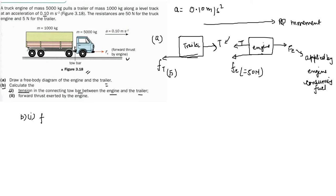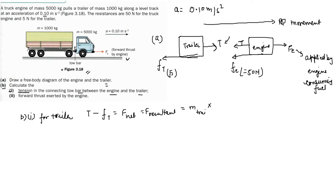Focusing on the trailer: the force acting to the right is T, and the force acting to the left is friction f. These are equal to the net force, which equals mass of trailer times acceleration: T − f = m × a.